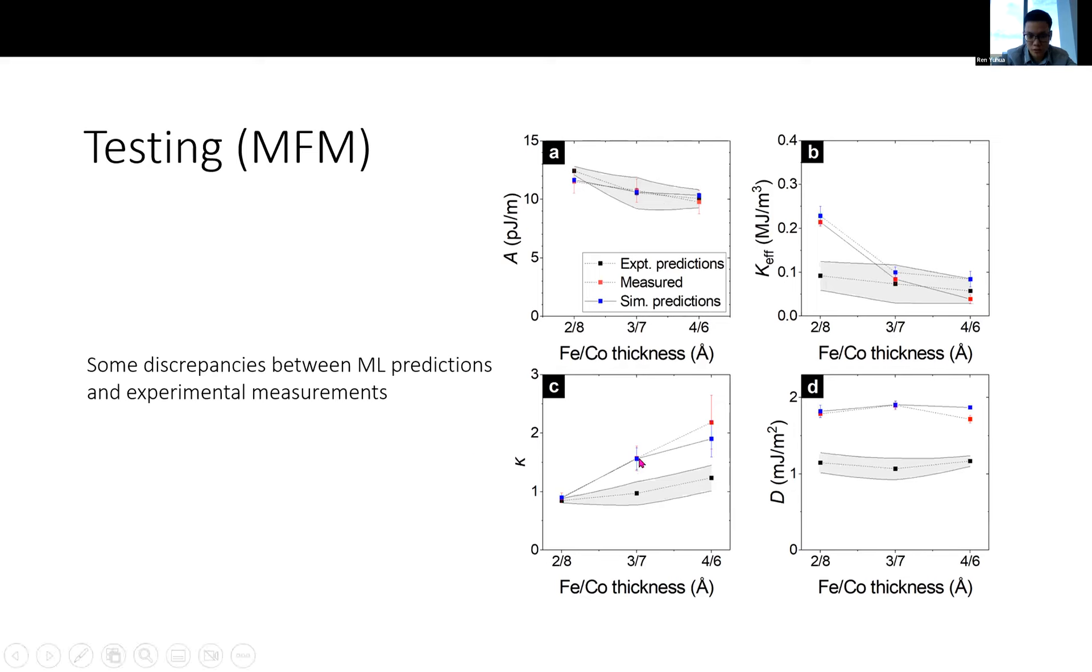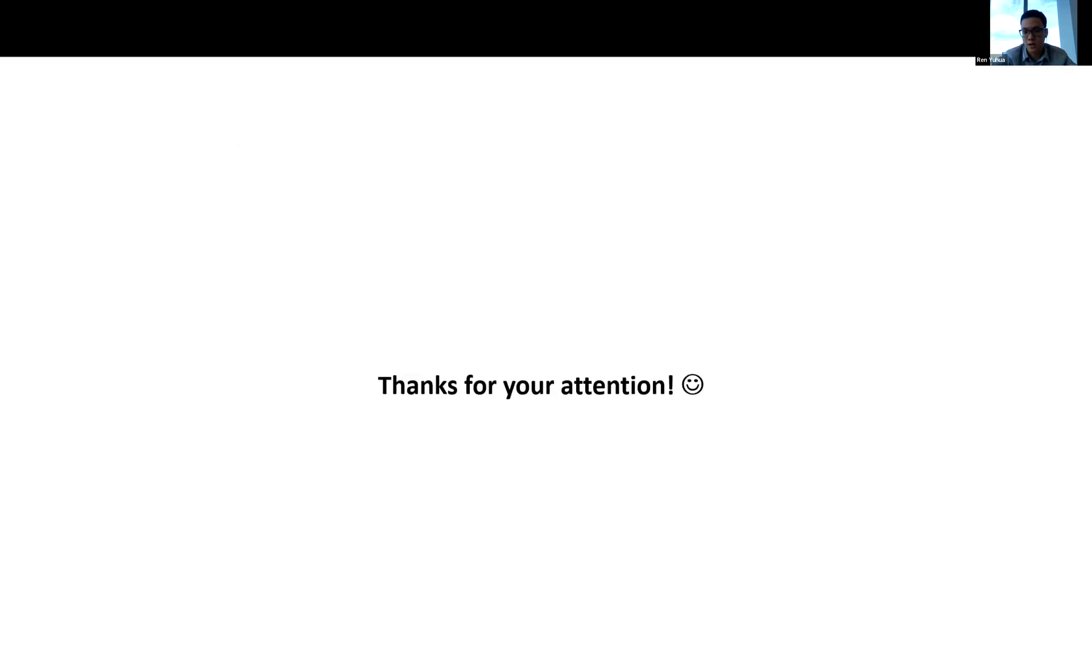We try to use the experimentally measured values to regenerate some simulation images. This time, we use the model to predict on them. These are shown in the blue lines. They are quite close to the red points. This in fact shows that our model is quite consistent, at least. Although there are some discrepancies, we believe that this machine learning tool is useful in terms of helping us to get a first cut approximation to find the value of these parameters in an easy way. We hope that this can maximize the ability to extract information from these domain images and help us to accelerate our material characterizations. With that, I've come to the end of the presentation. Thank you.